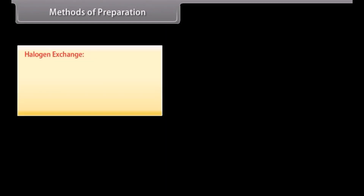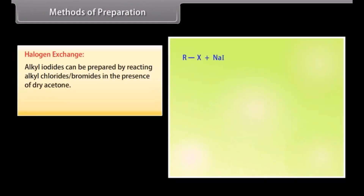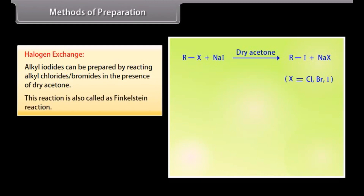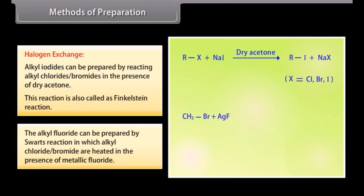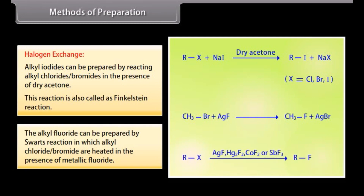Halogen exchange: Alkyl iodides can be prepared by reacting alkyl chlorides or bromides in the presence of dry acetone. This reaction is also called the Finkelstein reaction. Alkyl fluorides can be prepared by the Swartz reaction, in which alkyl chloride or bromide is heated in the presence of a metallic fluoride.